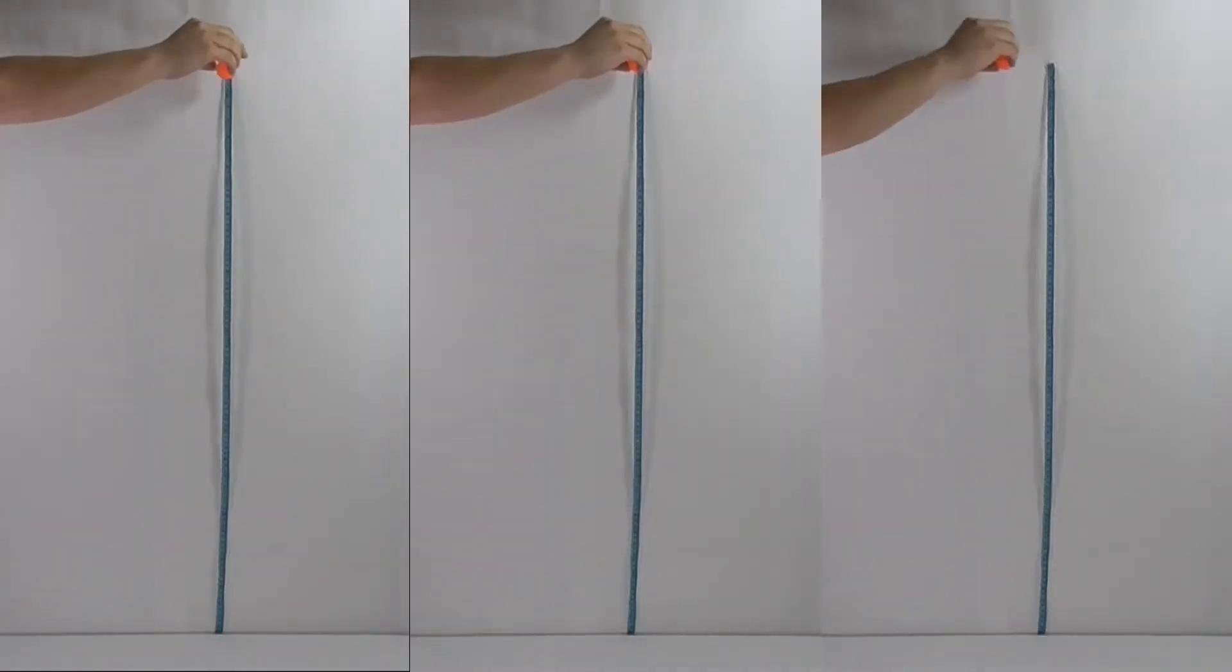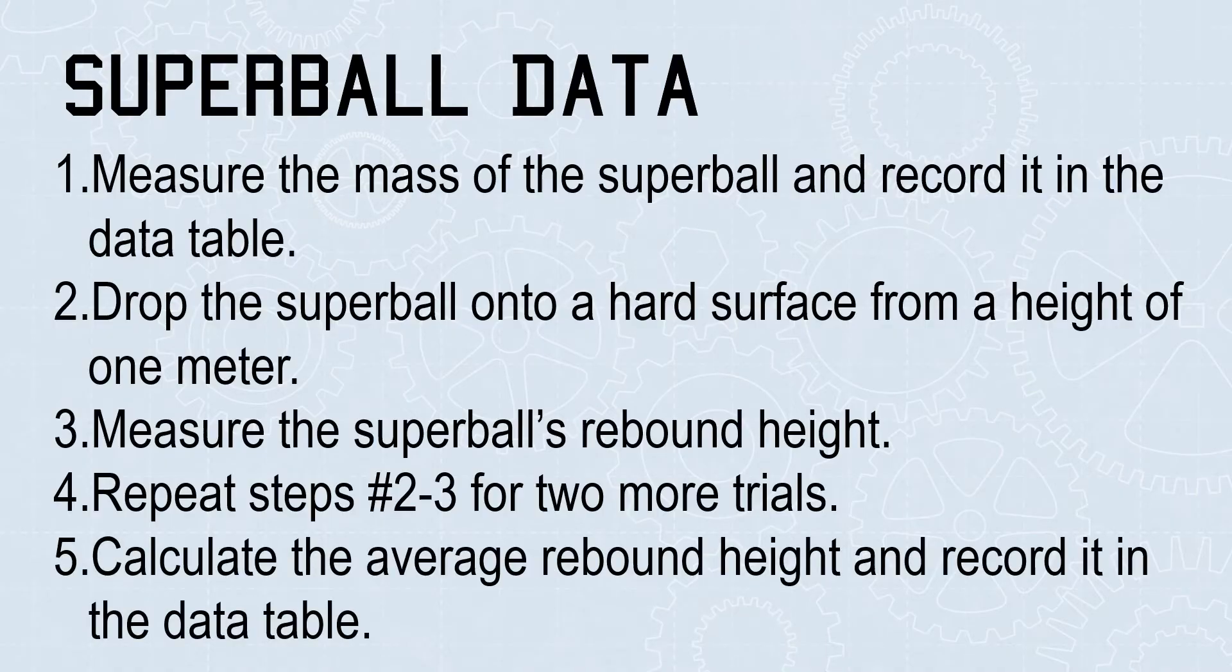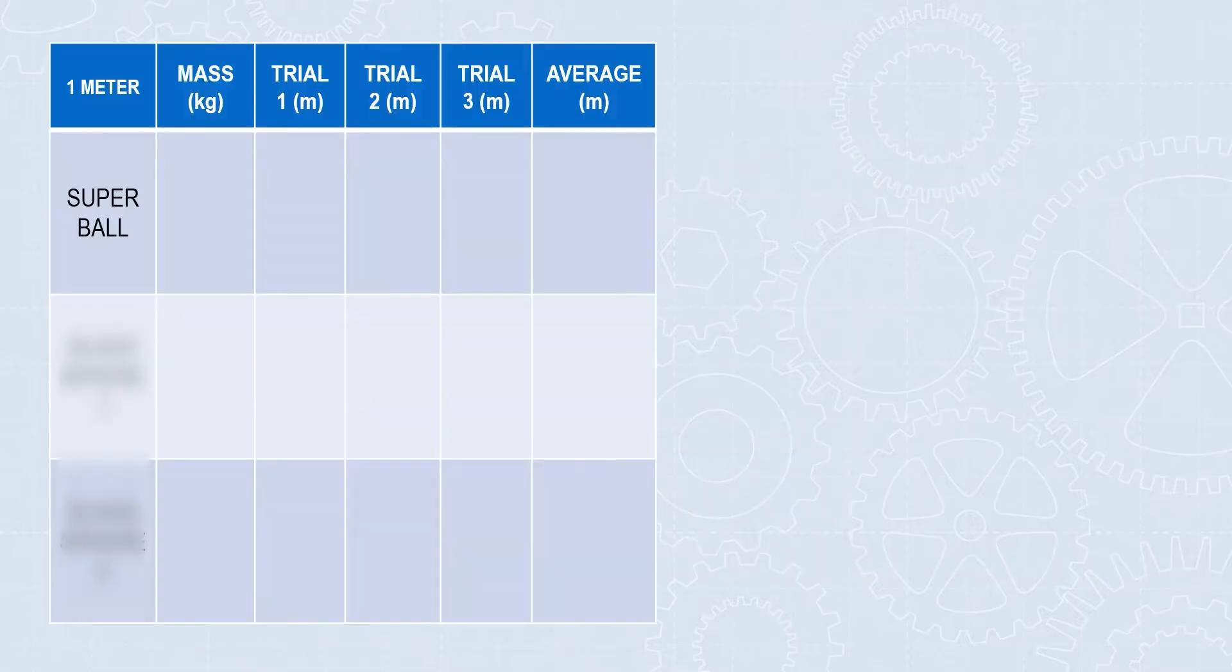One person drops the ball, one person measures the height. Five, calculate the average rebound height and record it in the data table.